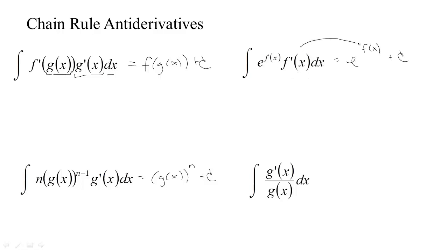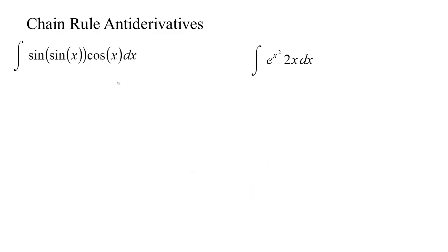So we know we could go backwards by doing that. This is what natural logs look like — when you take the derivative of the natural log, you get the derivative of the inside over the inside. So this would be the natural log of the absolute value of g of x plus some constant c. Those are kind of abstract formulas, but let's look at a few cases where we could recognize what's happening.